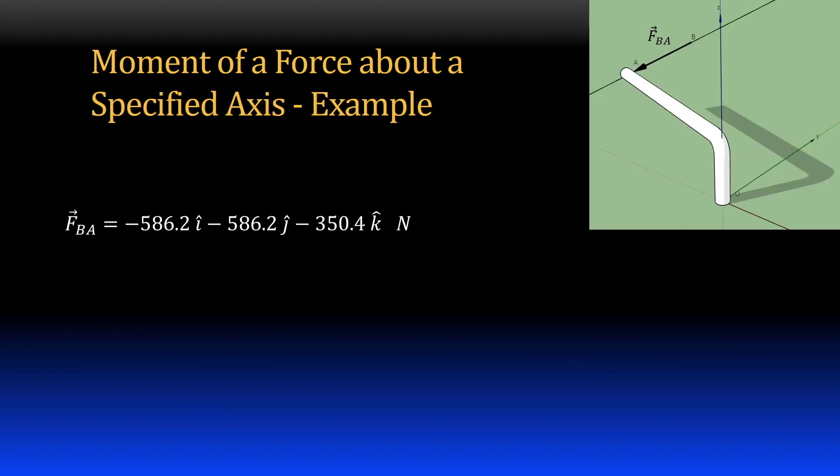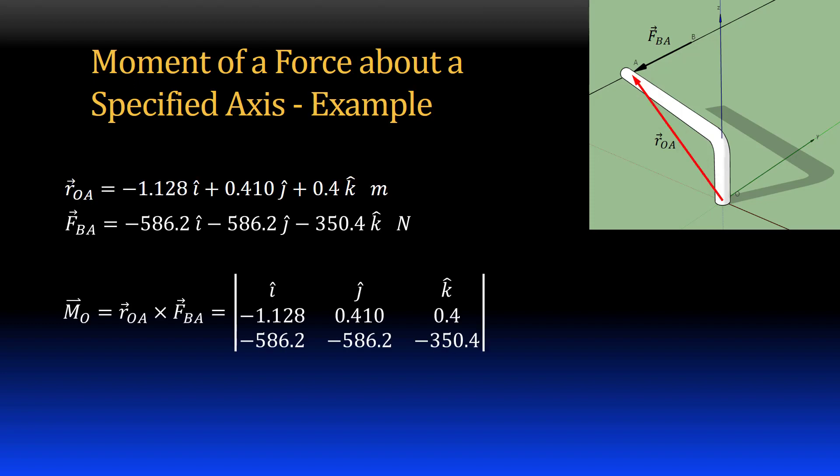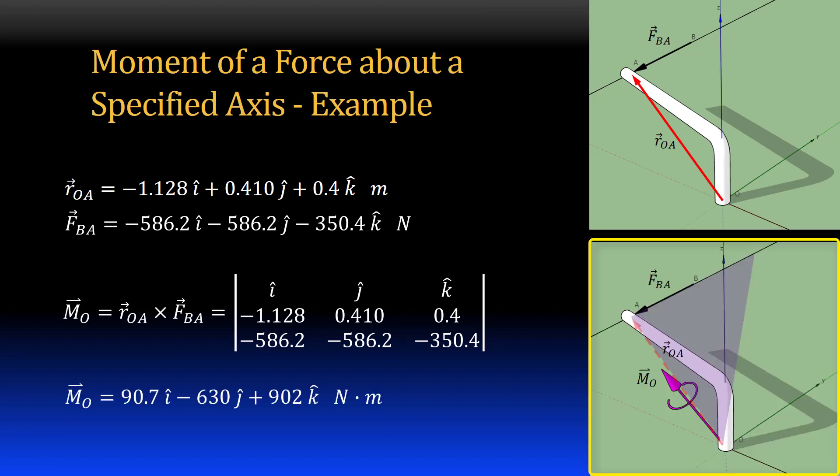Let's go back to our example of the bent bar. Here is vector FBA in Cartesian notation. To get the moment about point O, I form a position vector from point O to a point on the line of action of the force. I will take it to point A since I know the geometry of my bar. I can get the moment vector by finding the determinant of the matrix. And here it is. The image shows the orientation and direction of the moment.